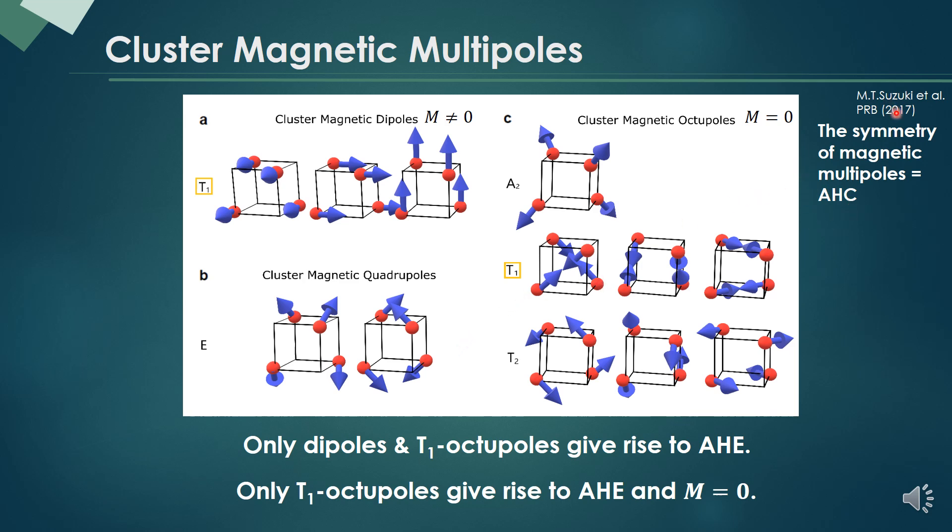It is known that when we classify the magnetic structure like this, among these, the magnetic multipole whose symmetry is same as the anomalous Hall conductivity can only give the anomalous Hall effect.